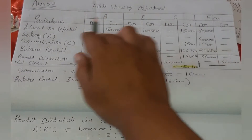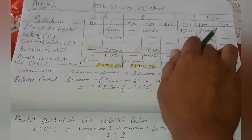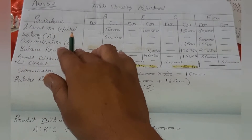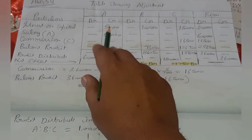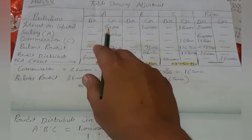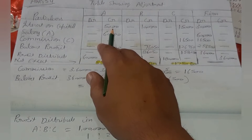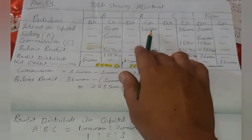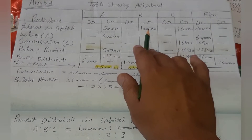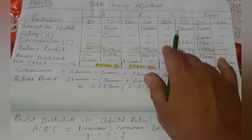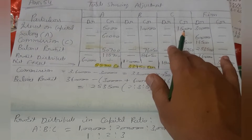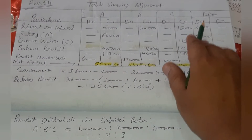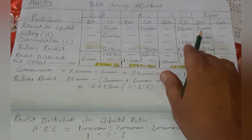आपको सबसे पहले table showing adjustment का format बनाना है। सबसे पहला point है interest on capital. A की capital 1 lakh है, 1 lakh का 5% = 5,000. B की capital 2 lakh है, 2 lakh का 5% = 10,000. C की capital 3 lakh है, 3 lakh का 5% = 15,000. Total होता है 30,000 जो firm के लिए debit है।